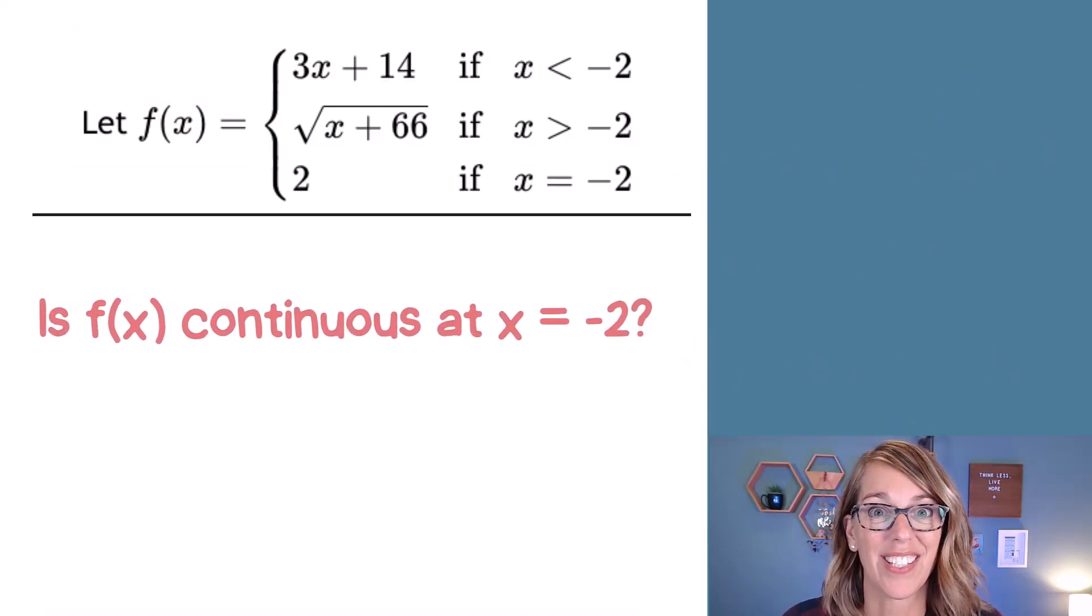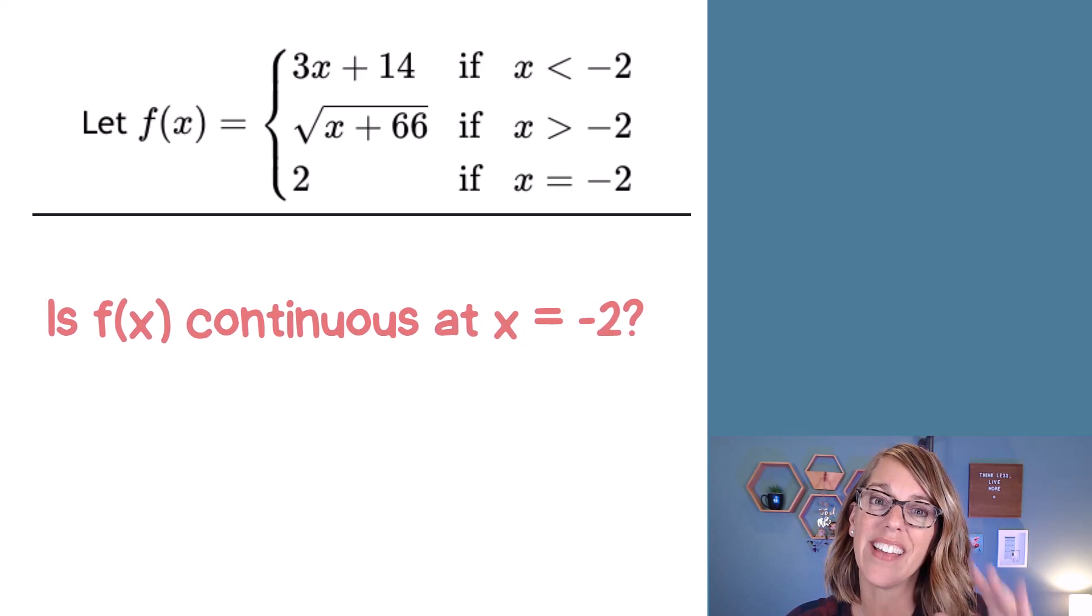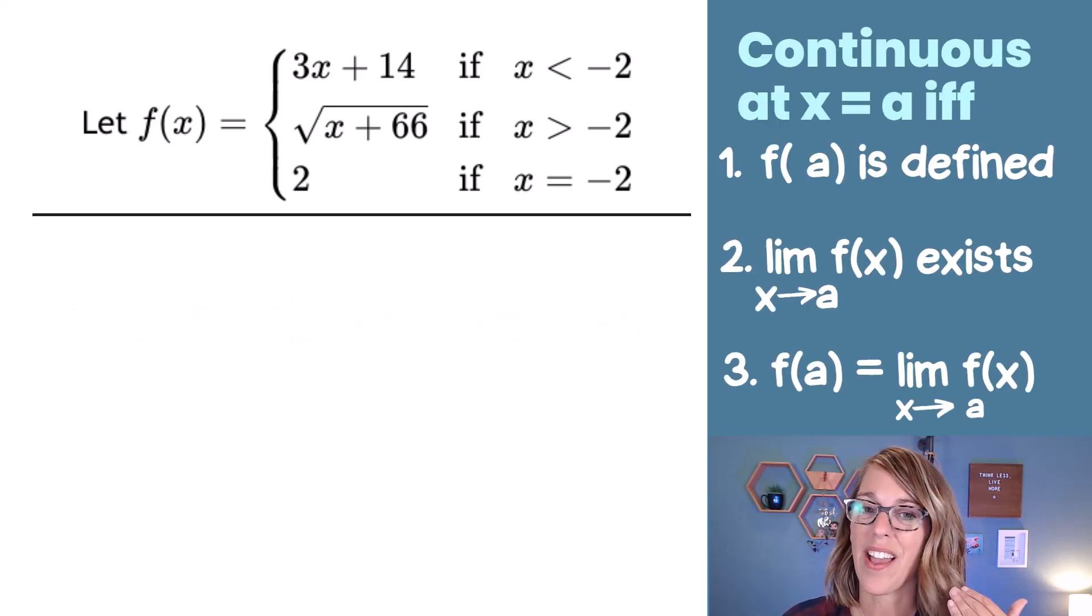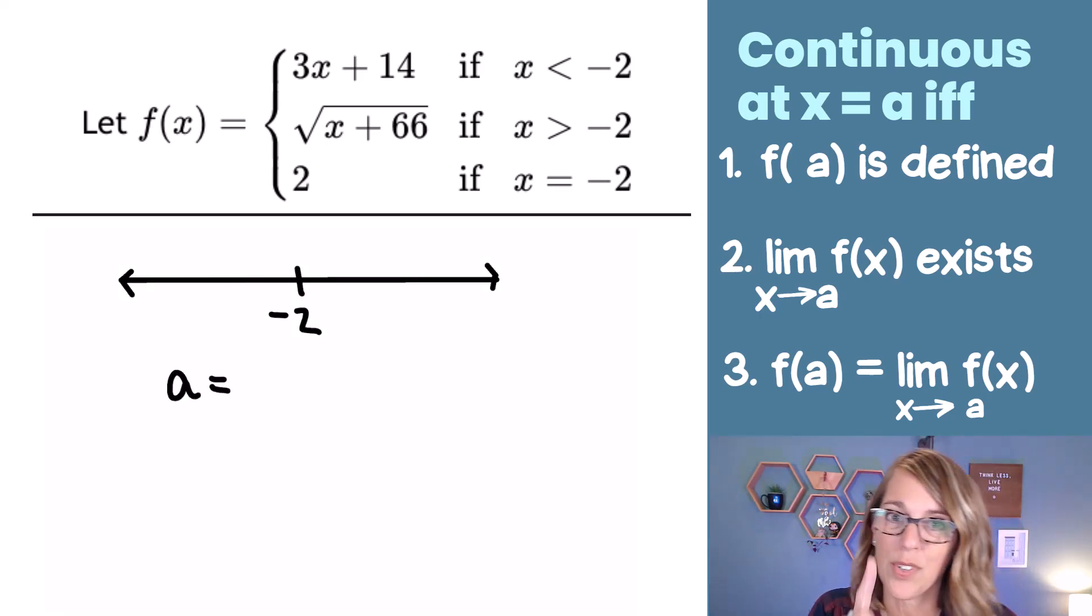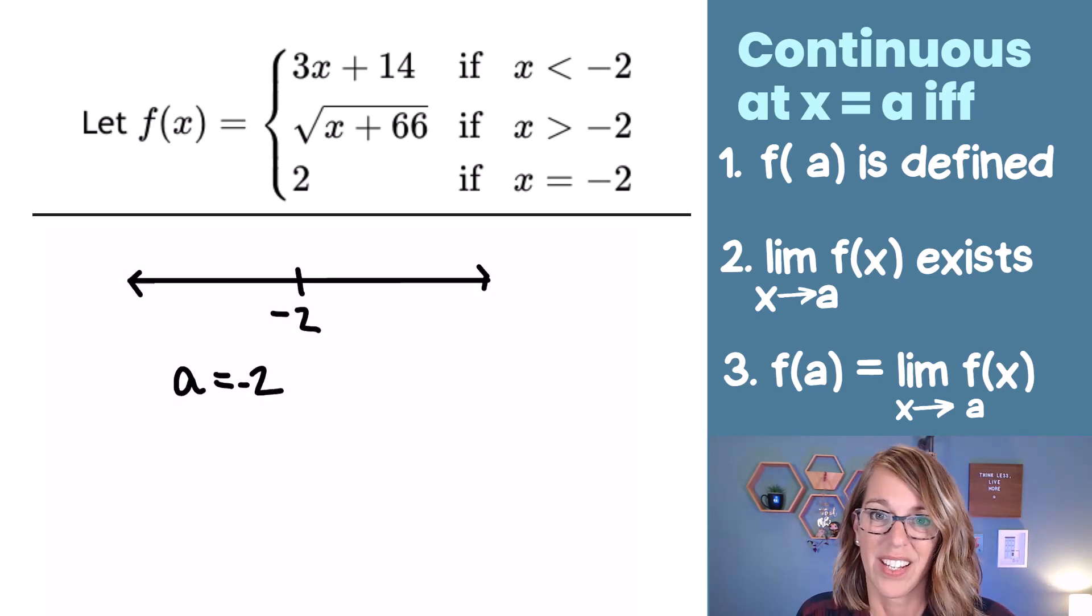Next, let's do one that doesn't satisfy the conditions. Now, I've got another piecewise defined function. Is this guy continuous at x equals negative 2? Well, I already told you it isn't. Let's find out why. I've got to satisfy all three of these conditions, starting with, is f(a) defined? Well, let's go ahead and start by saying that a is equal to the point where we're analyzing continuity, and that's going to be at negative 2.